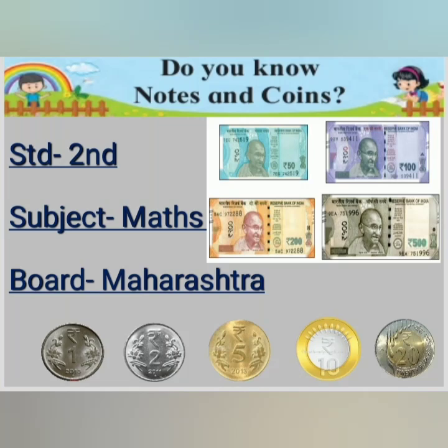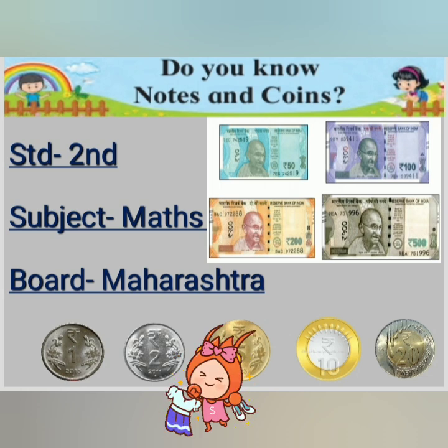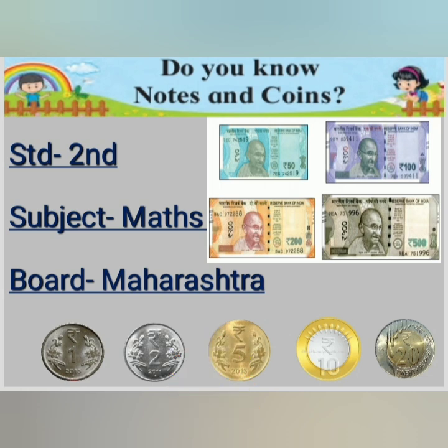Hello children, this is Farheen Miss. Today we are going to learn maths for standard second. Do you know notes and coins? We all know we use money to buy things. They come in two forms: notes and coins. They are called currency. In India, the currency is represented by rupee or paisa. Let's learn how to add currency of different denominations to get the total amount.